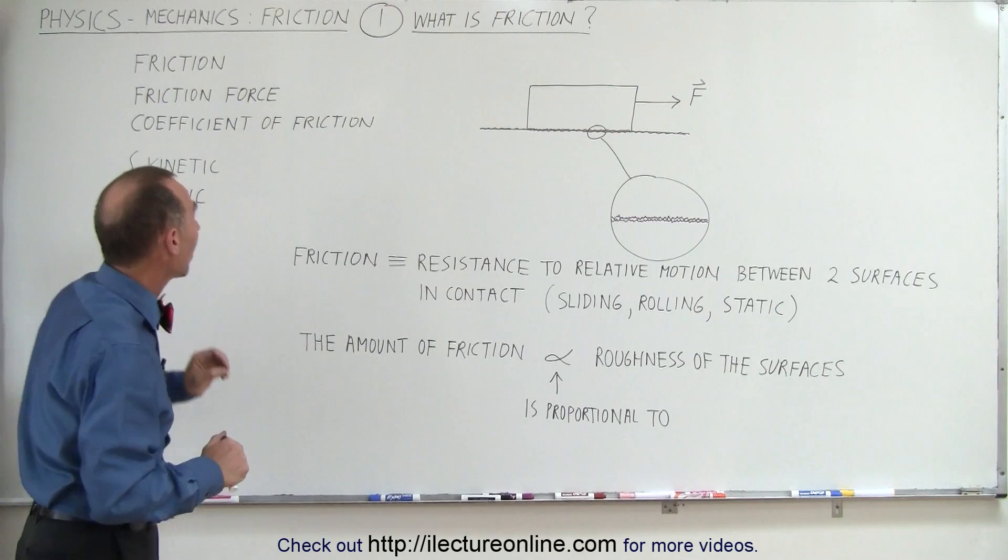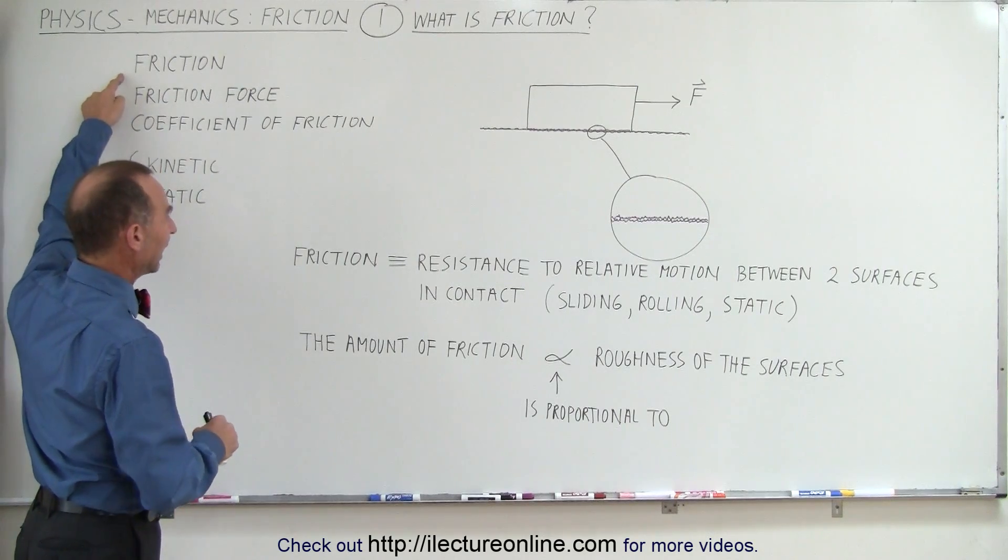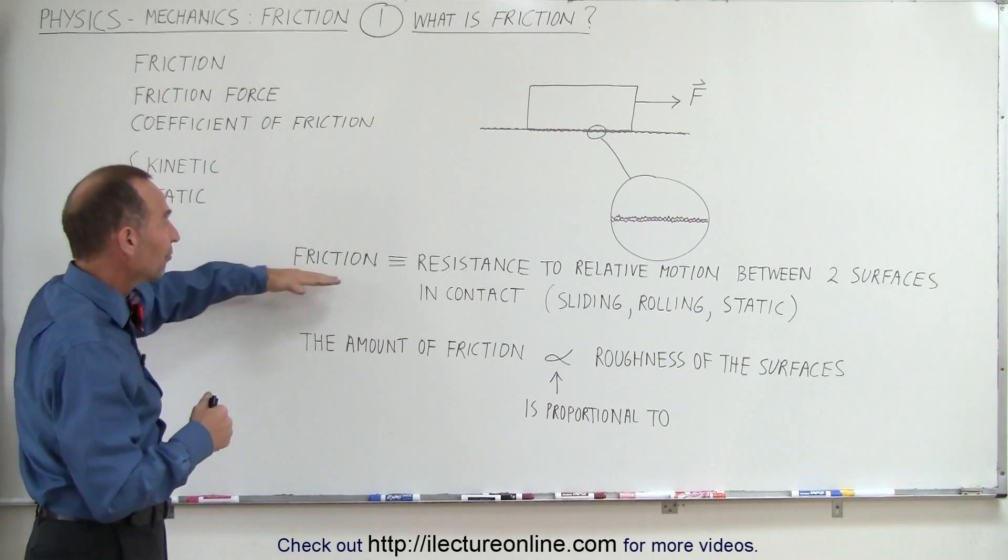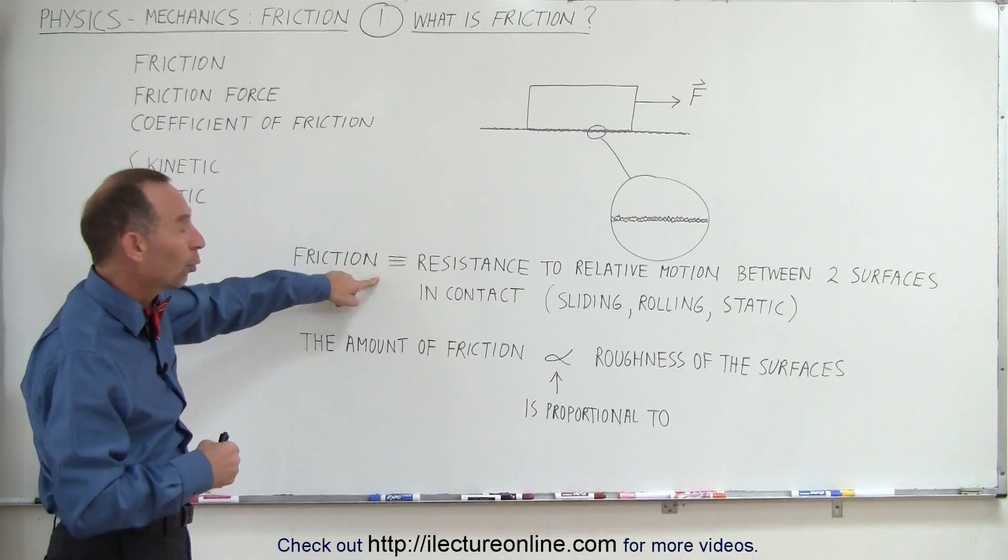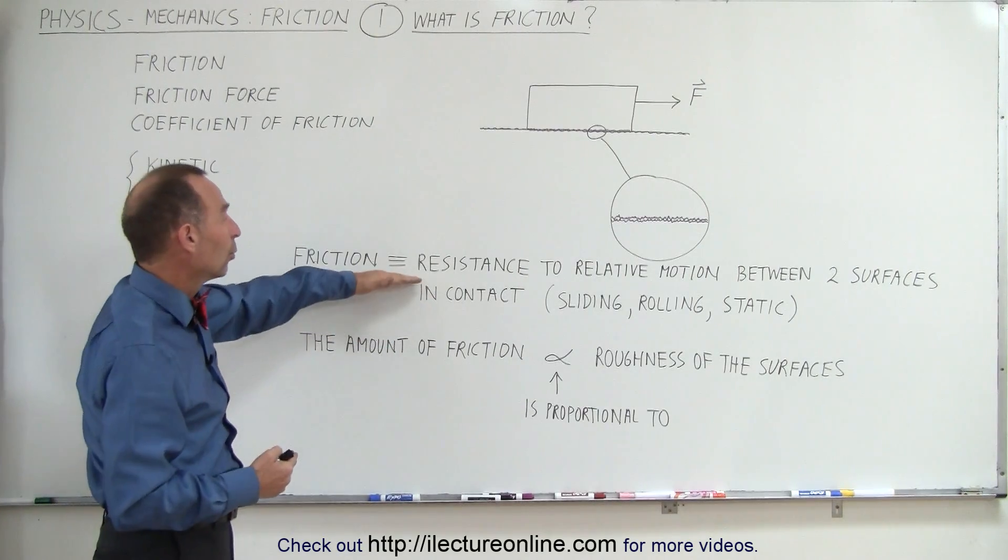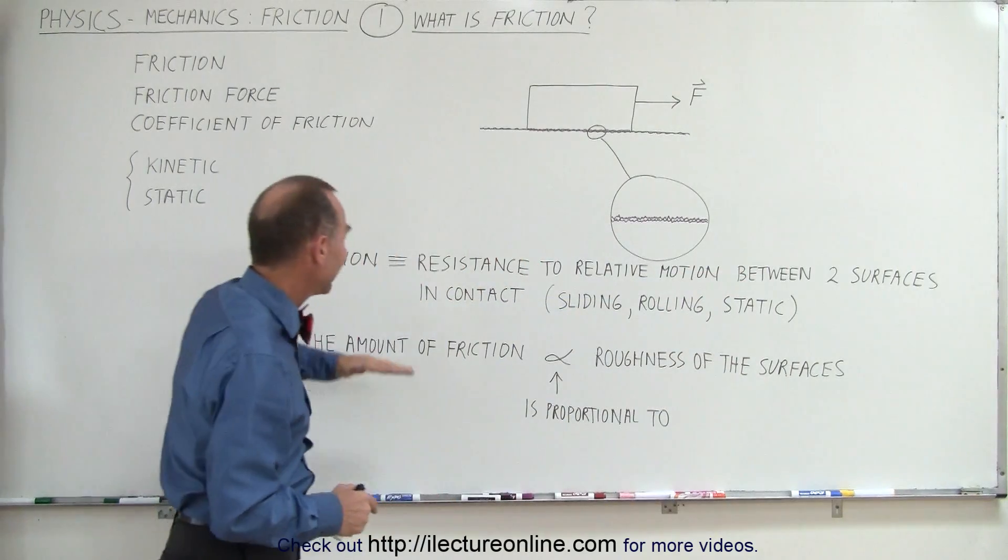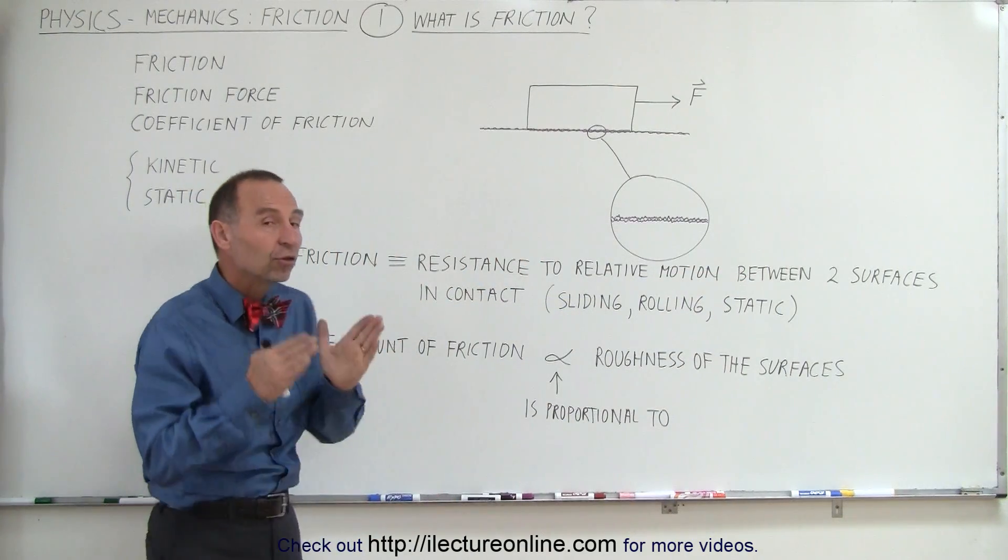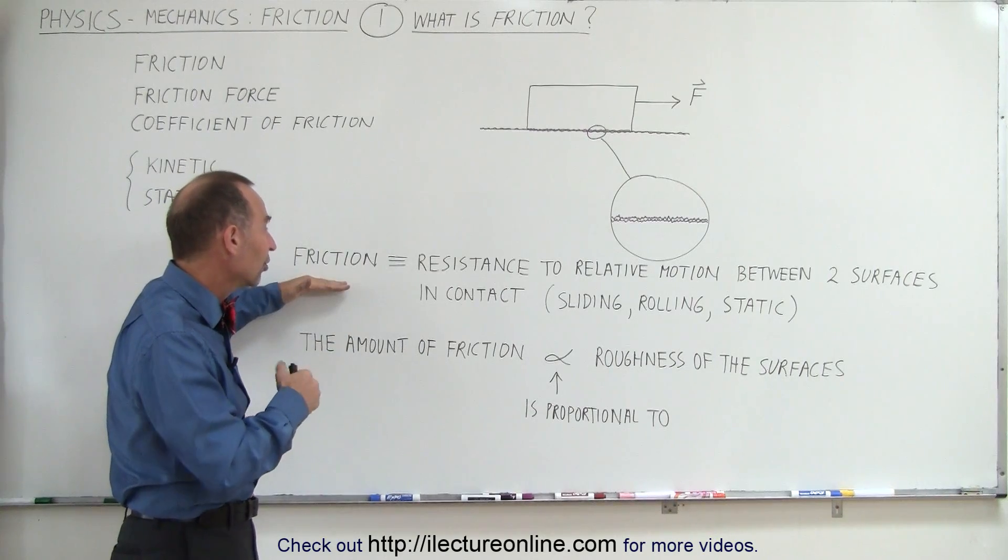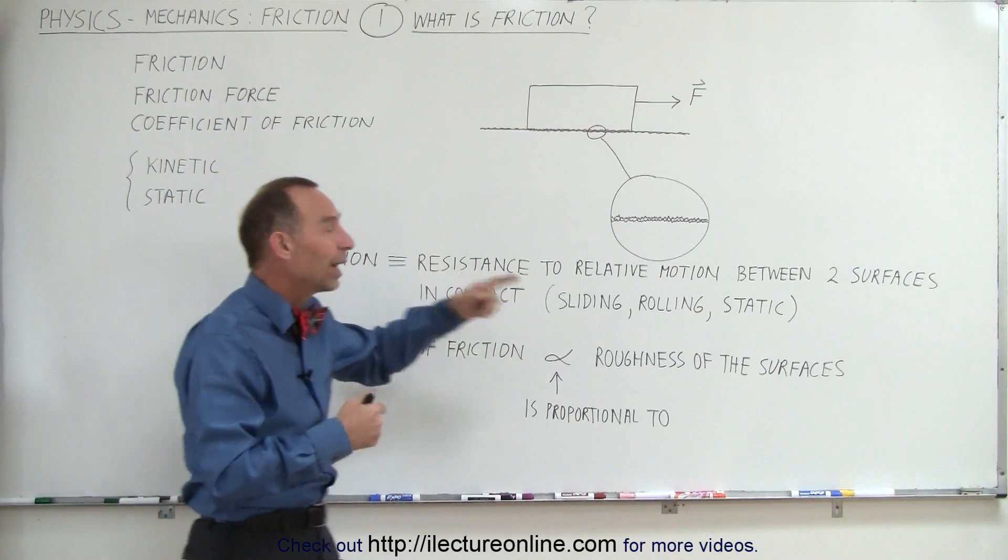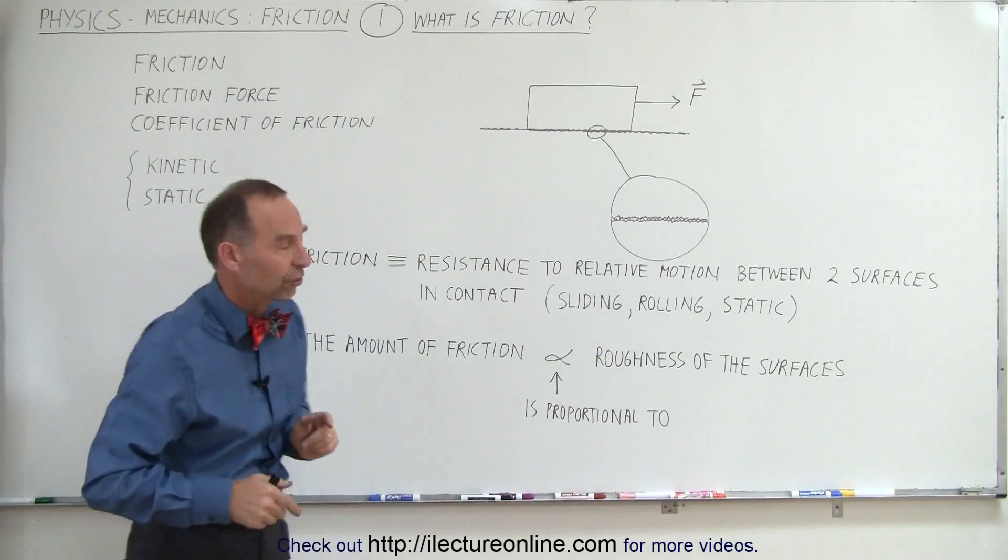But let's concentrate here on the term friction. The definition is that friction is defined as resistance to relative motion between two surfaces in contact. So whenever there are surfaces in contact to one another, friction offers resistance to relative motion between the two surfaces.